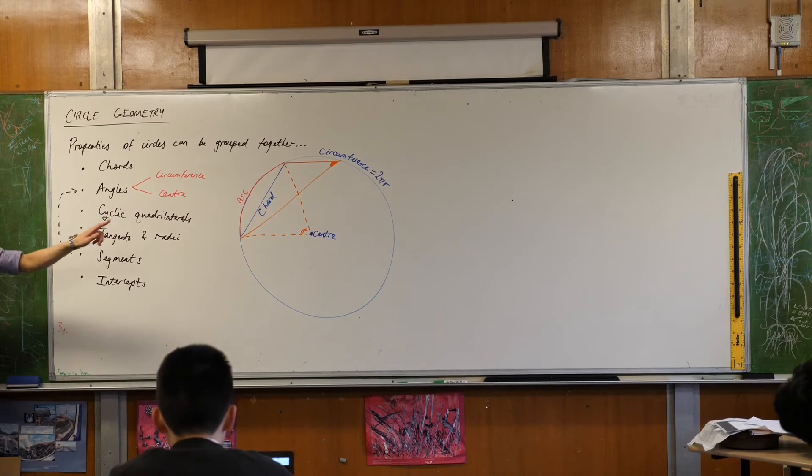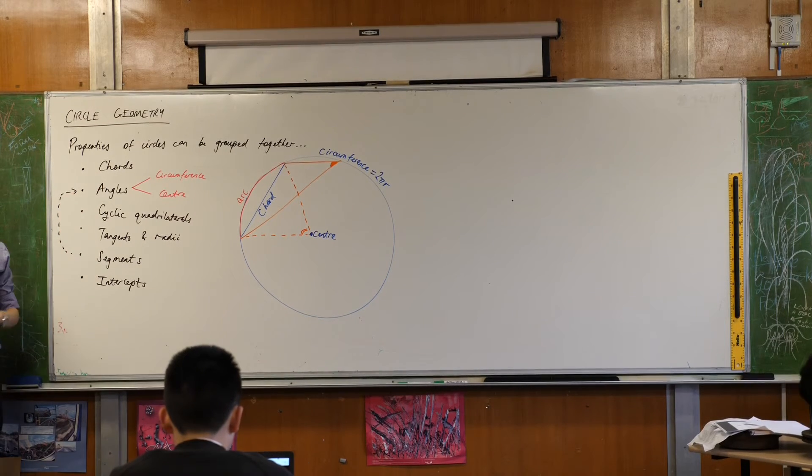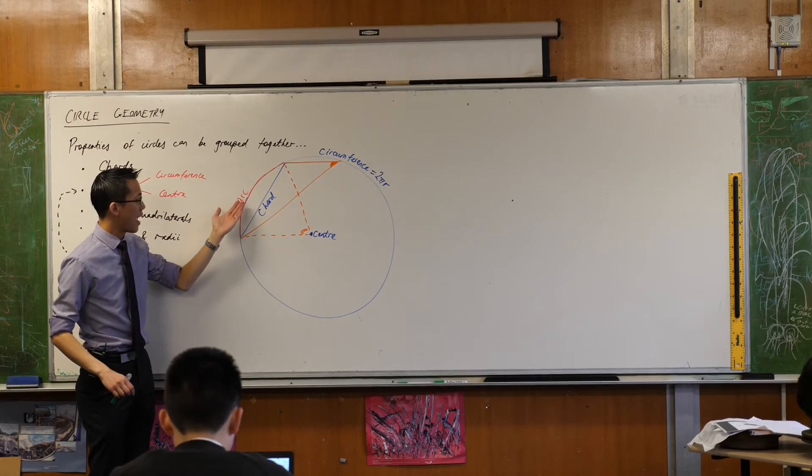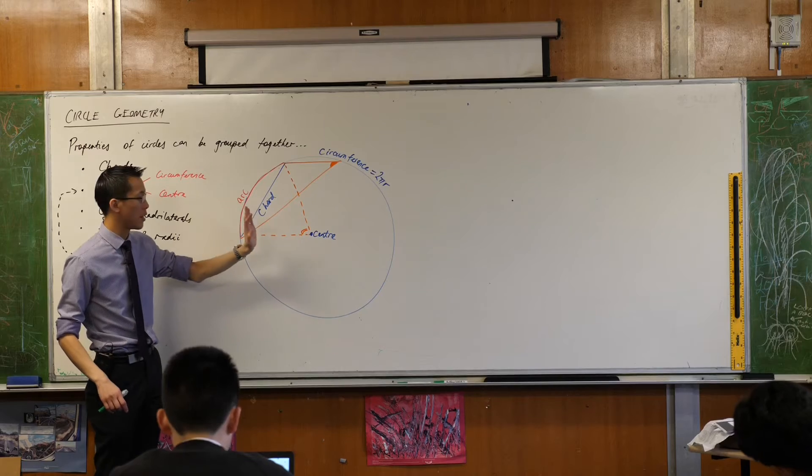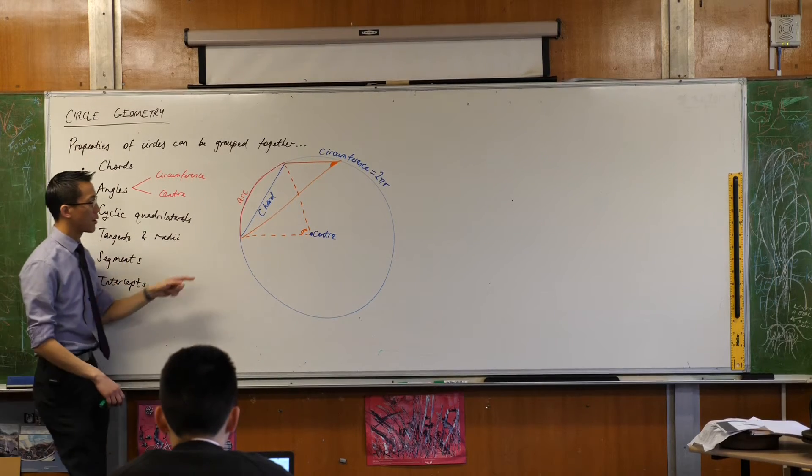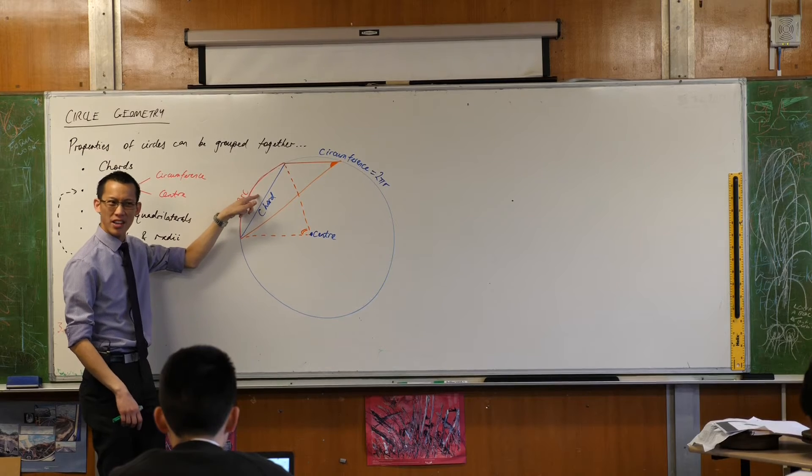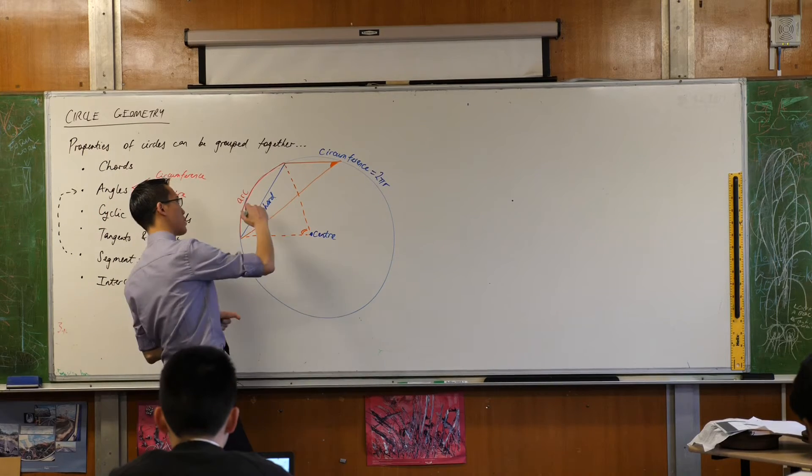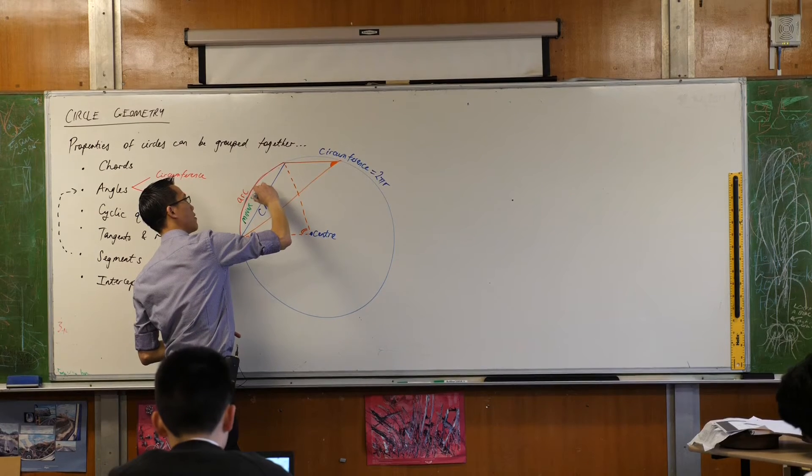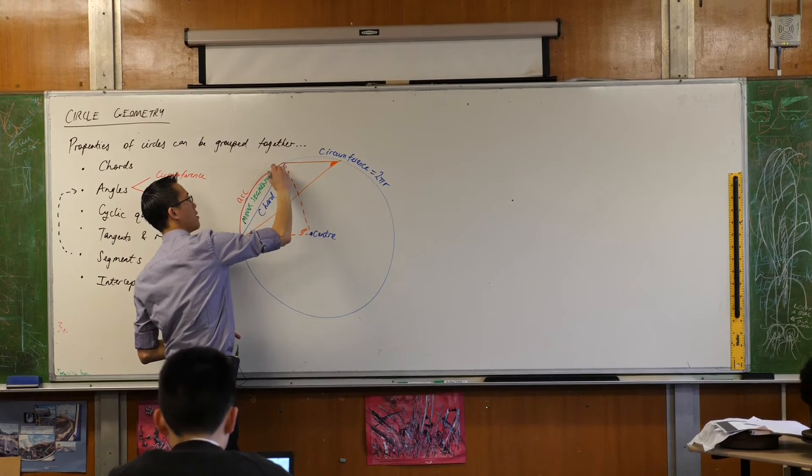So we've got chords, we've got some angles flying around. Here's something helpful. A chord has blocked off two different sections of this circle and we call these sections segments. Because you've got a smaller part of it and a bigger part, we would call this guy over here the minor segment.